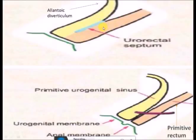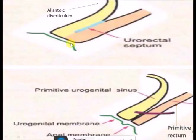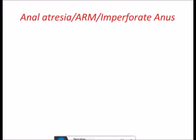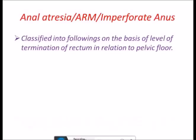If there is any communication between the two divisions, or if the urorectal septum is not fully formed, there would be a rectovesicle fistula or recto-urethral fistula. If the anal membrane is not absorbed, this will lead to a low anal fistula, because the anorectal canal will reach up to the skin but will not open, resulting in dimple formation.